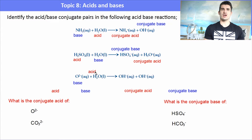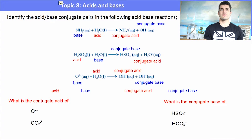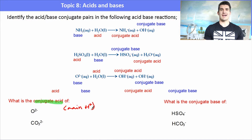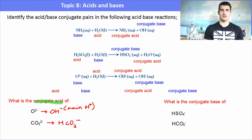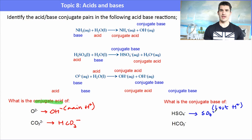In the last example, the oxide ion reacts with water — water donates a proton to the oxide ion, producing two OH⁻, so either can be classified as conjugate acid or base. We may also be asked to write the conjugate acid of a species, which means it gains a proton: oxide ion → hydroxide, carbonate → hydrogen carbonate. The conjugate base means it has lost a proton: HSO₄⁻ → SO₄²⁻, and HCO₃⁻ → CO₃²⁻.